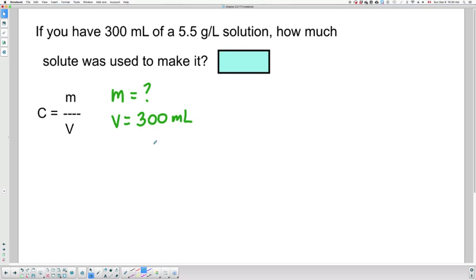Don't forget you really should list your information because as you are presented with different types of problems it can become confusing as to what kind of formula you're supposed to be working with. Always get into the habit of listing your info and also including your units. That's going to help you verify if you need to convert any of these values. So back to the problem. Concentration, it says in the problem, 5.5 grams per liter.